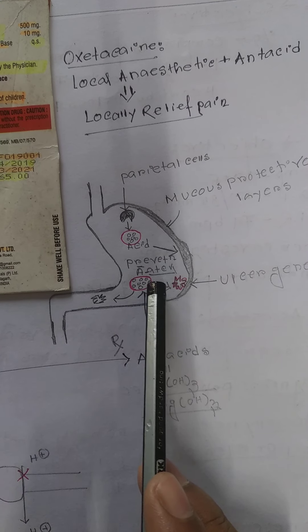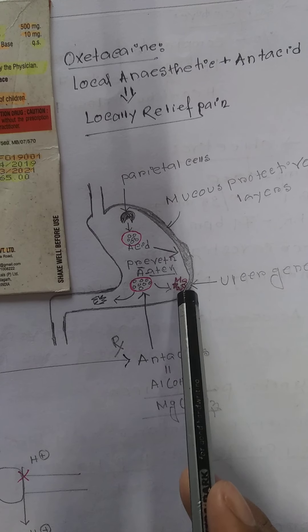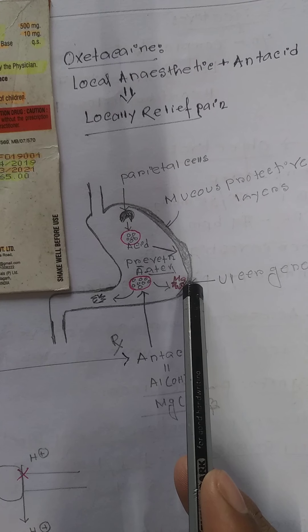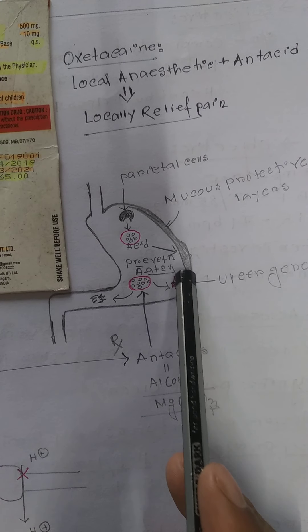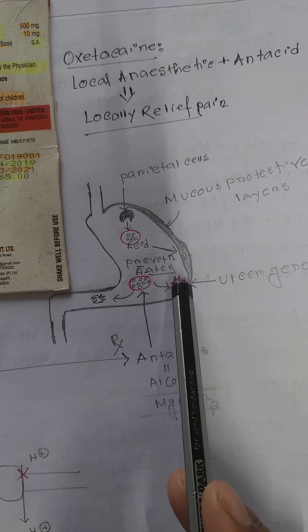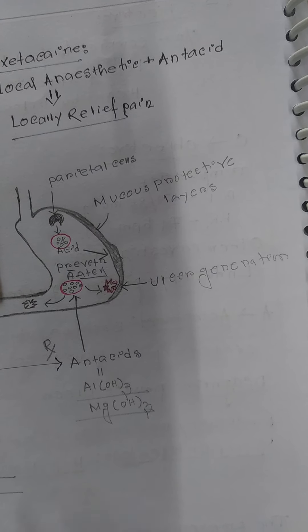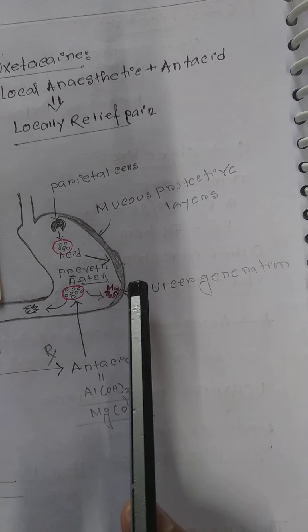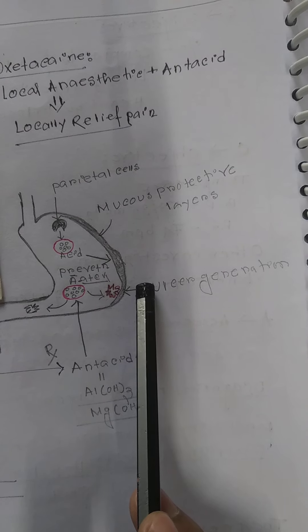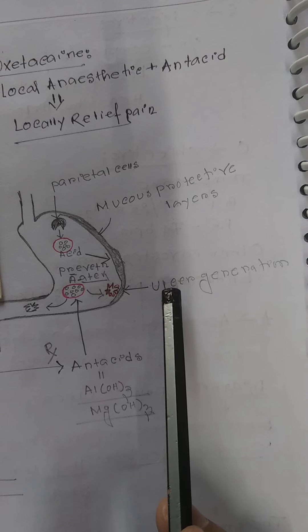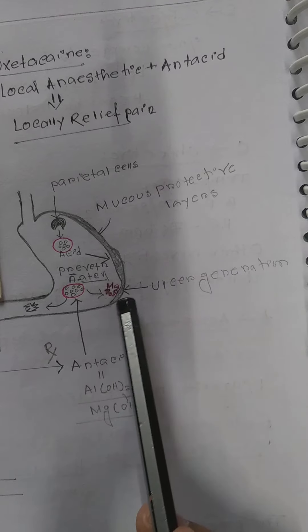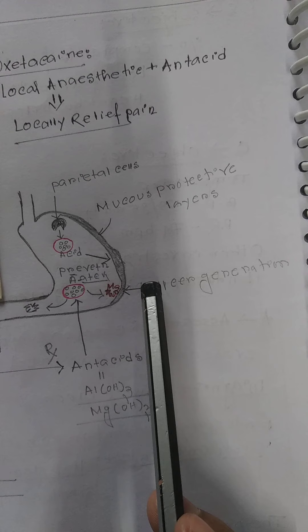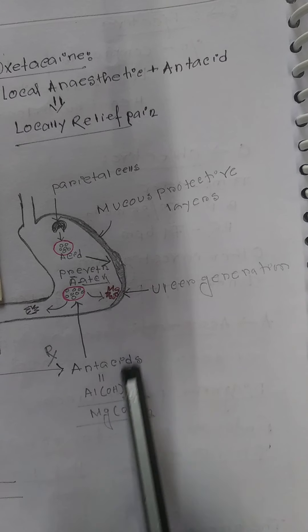This causes peptic ulcer. Ulceration happens because of excess HCL secretion. Because of excess secretion of HCL, this mucus protective layer is going to be damaged and it leads to ulcer formation in that mucus protective layer.